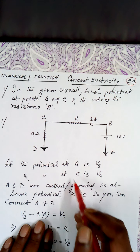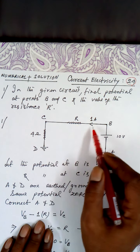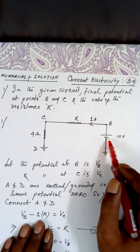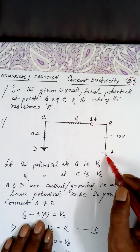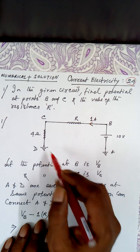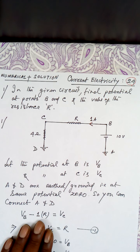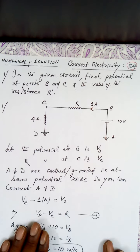What is given? This resistance is 4 ohm. This resistance is not known. One ampere current is flowing through the circuit. The cell is 10 volts — an ideal cell having no internal resistance. One end is connected to the earth and the other end is also connected to the earth. Connected to the earth means they are at zero potential.